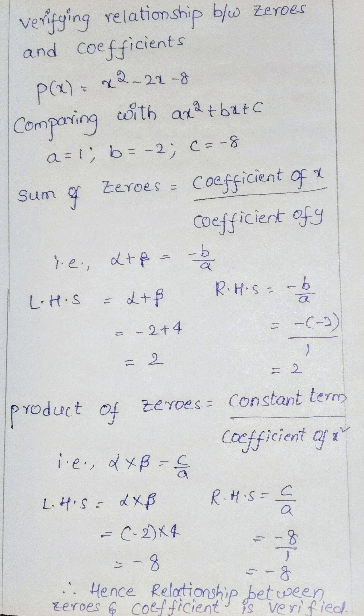According to the question, both the sum of the zeros and the product of the zeros satisfy LHS equals RHS. We have proved that the relationship between the zeros and the coefficients is verified.